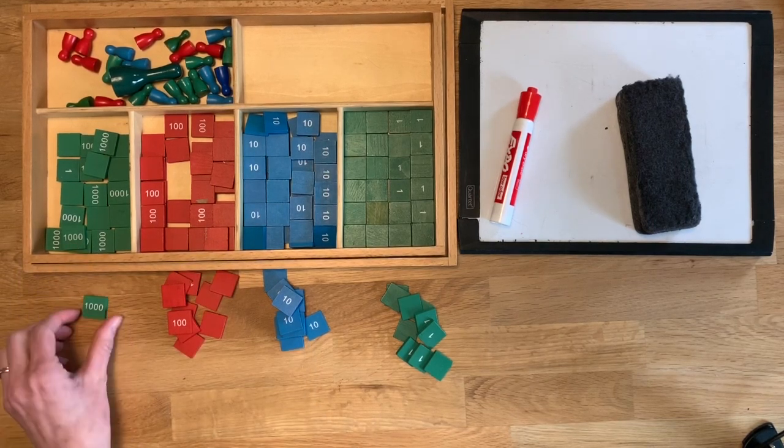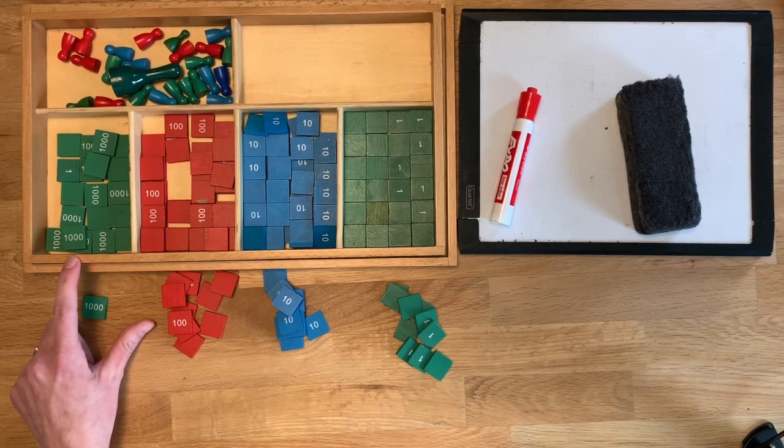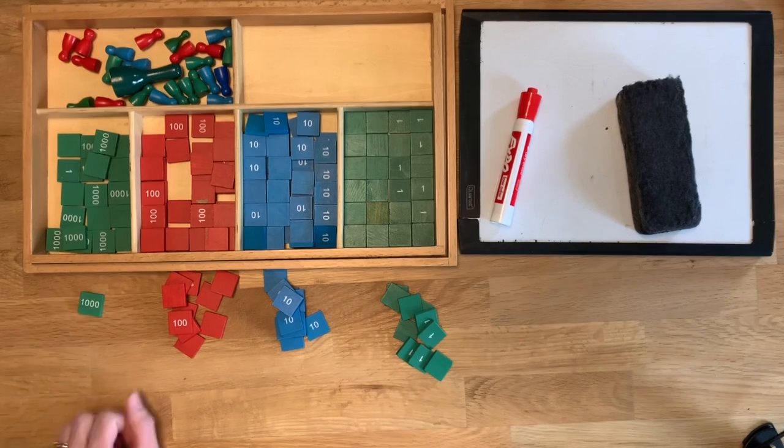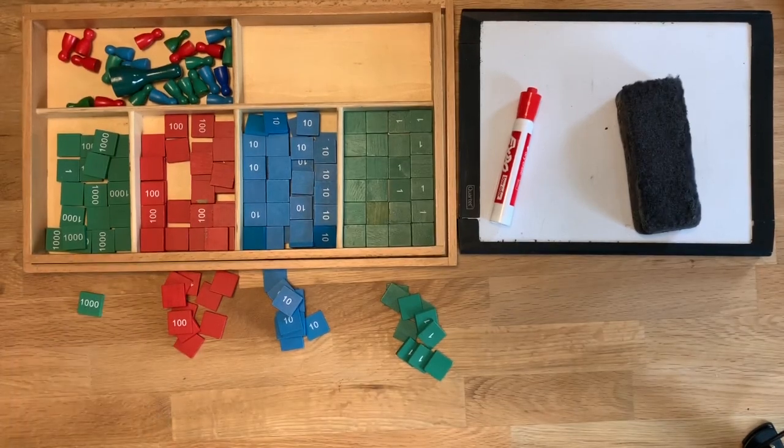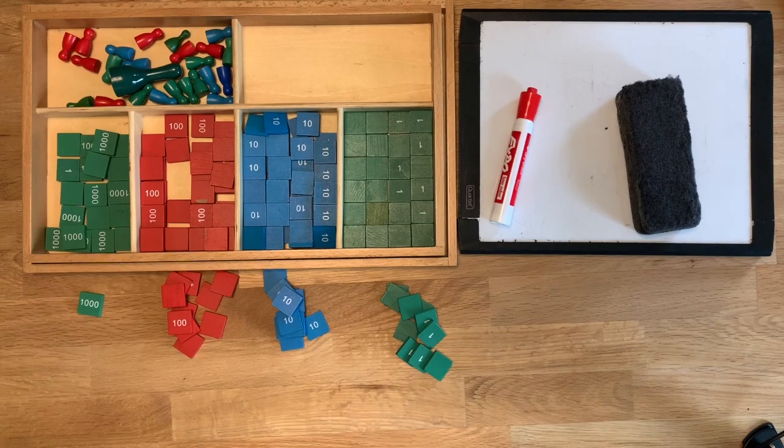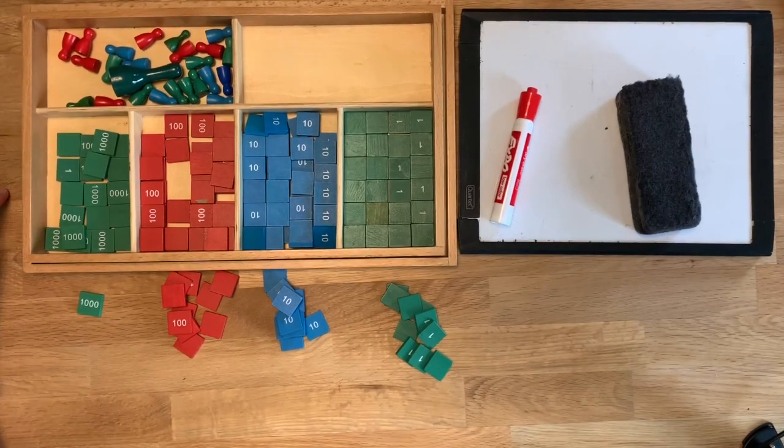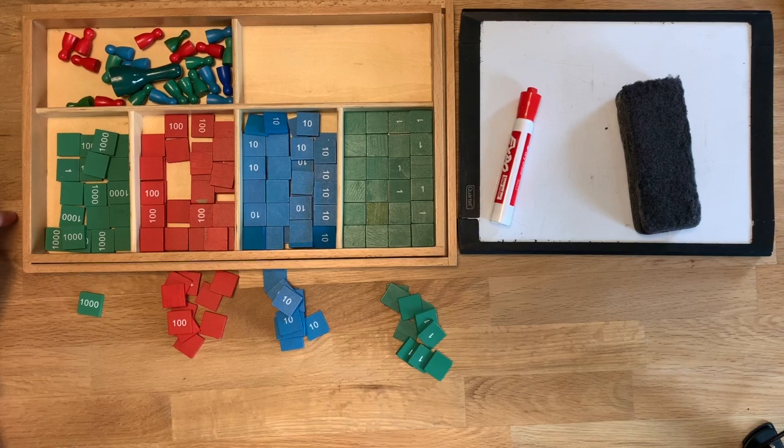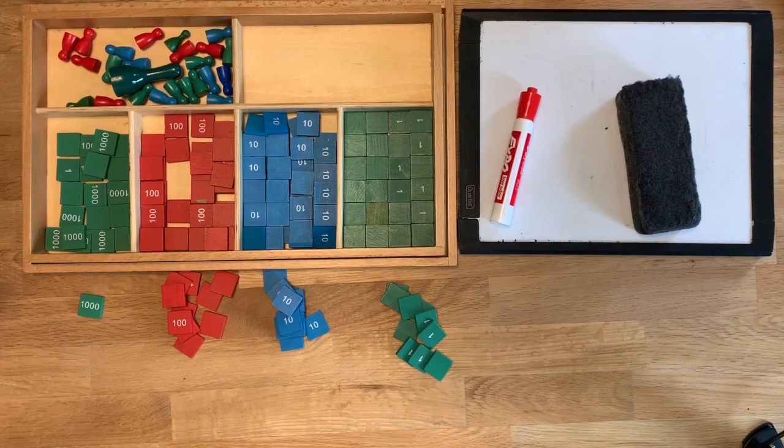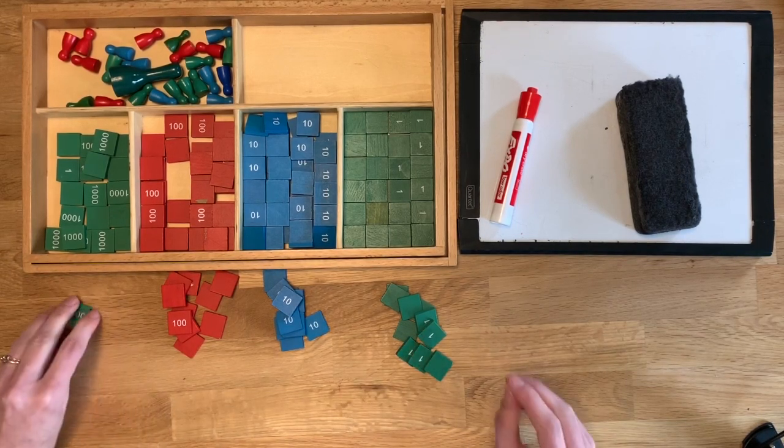And why is this 1,000 green? I thought only units were green. Well, it's because this is the units of thousands. So the next category, if we had more tiles over here on this other side of the thousands would be 10,000. And it would be what color? Blue. And how many thousands would equal 10,000s? 10. 10 is the magic number.